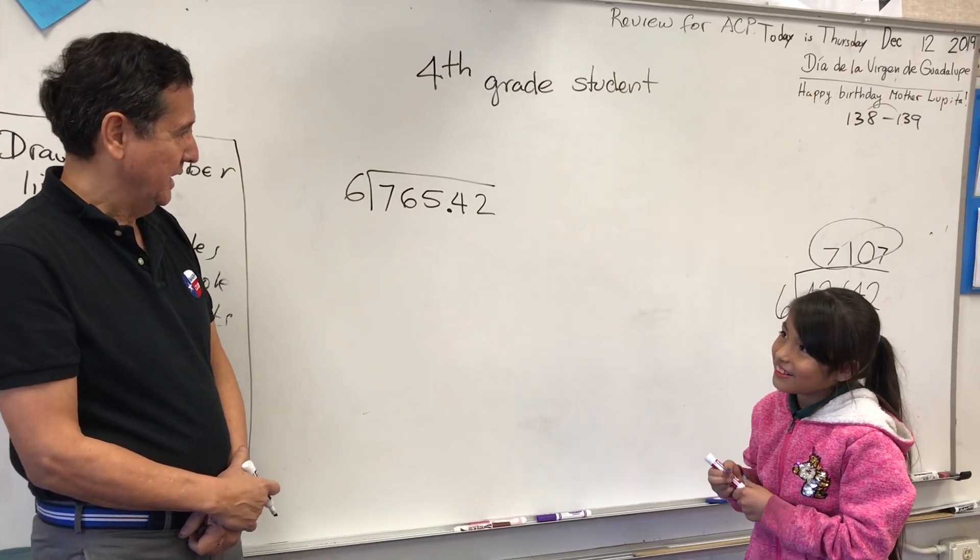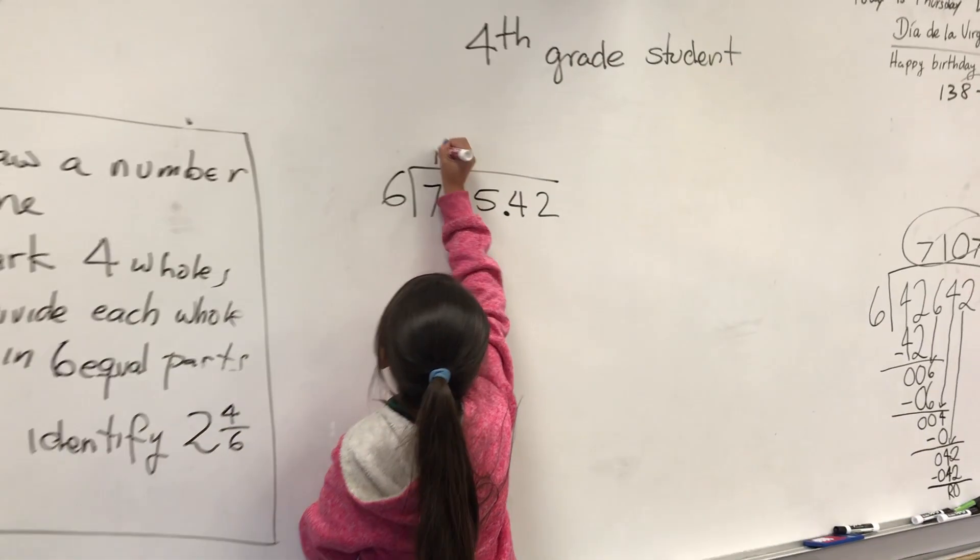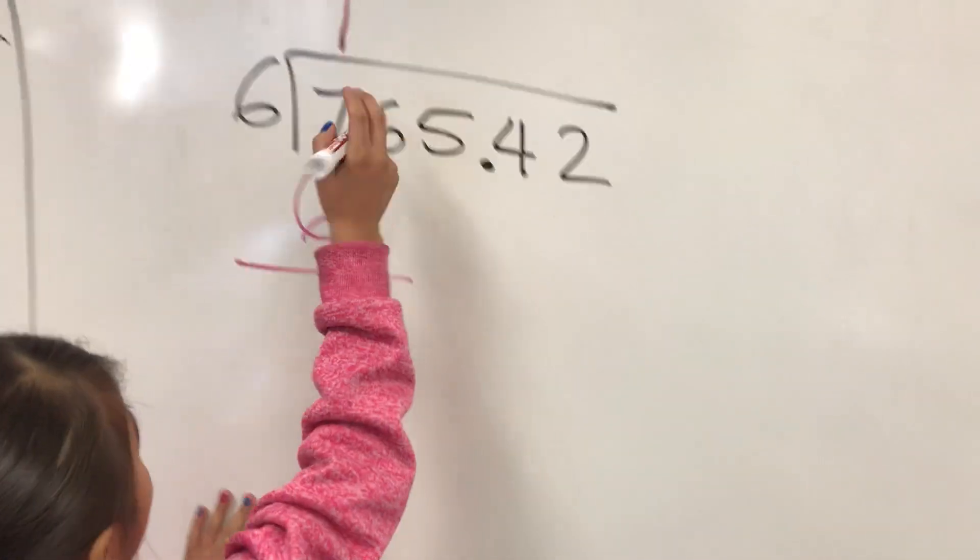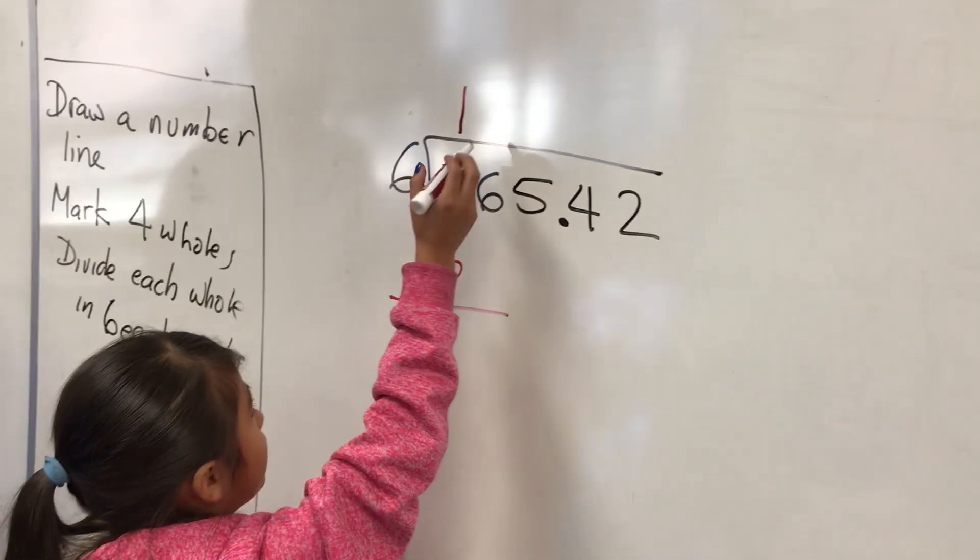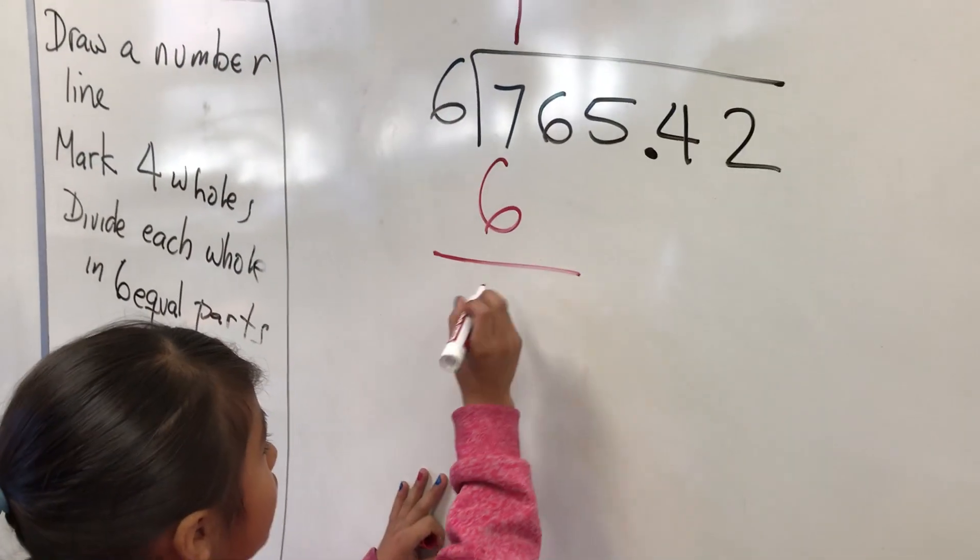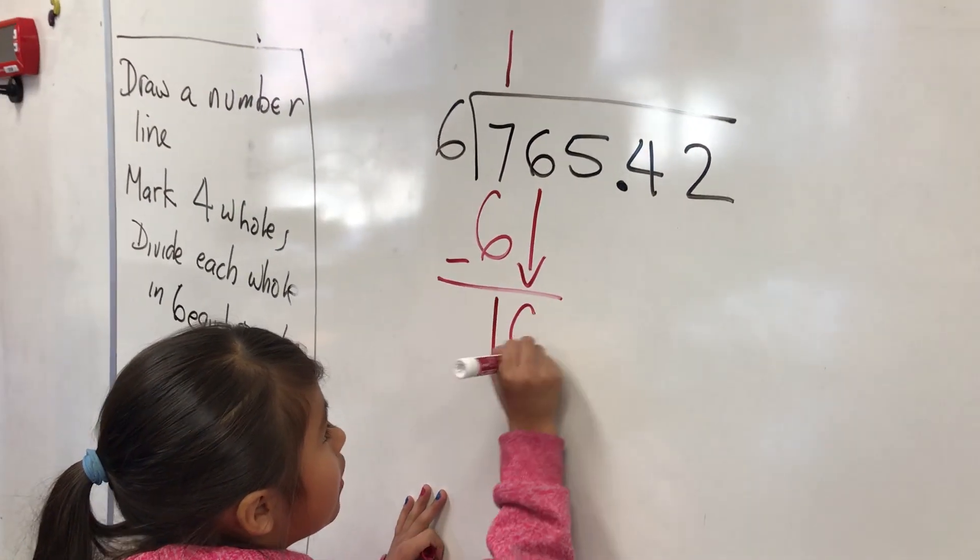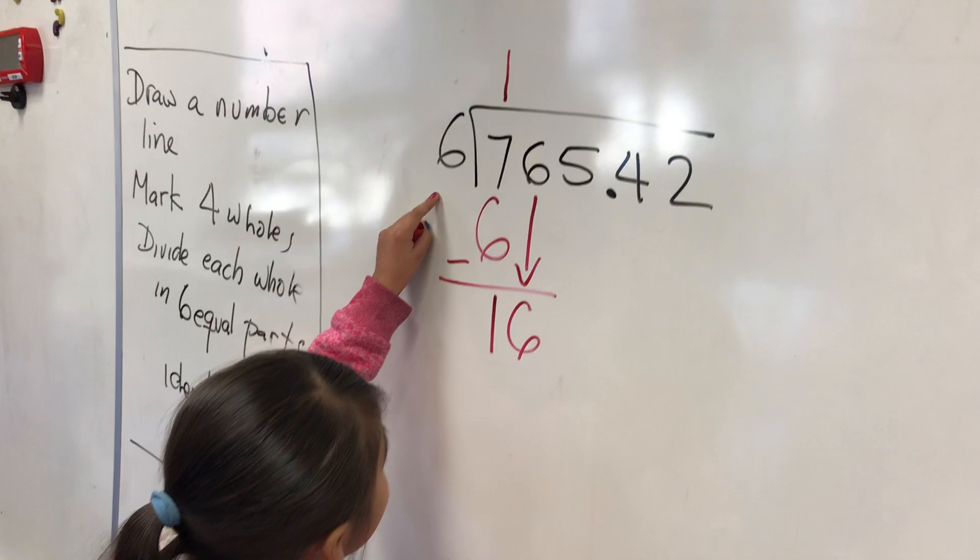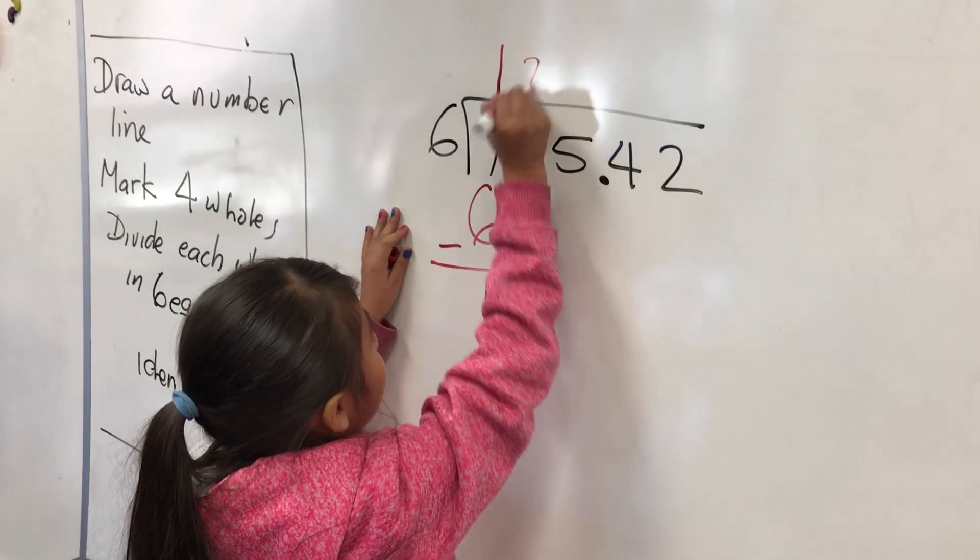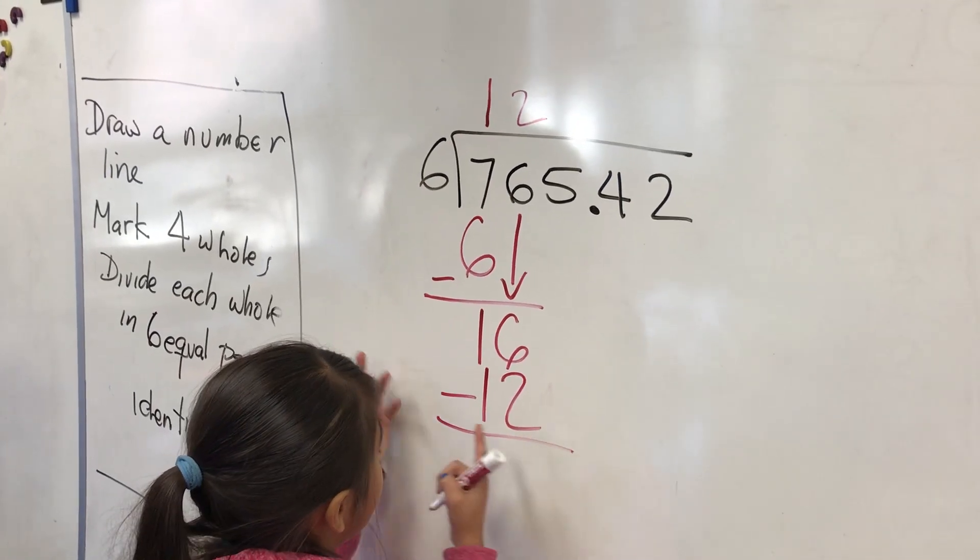Okay, let's try. Do it. Let's pick up 7 divided by 6 equals 1, because 1 times 6 equals 6. Subtract 1, bring down the 6. 16 divided by 6 equals 2, because 2 times 6 equals 12. Subtract 6 minus 2 equals 4.